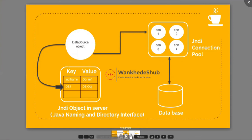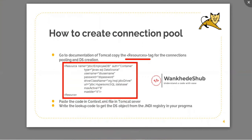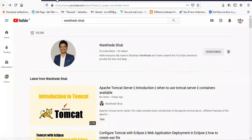This is how we retrieve or get the connection object from your connection pool through the DataSource object. Now, how can you create the connection pool? The steps are very simple. First, you need to search for the Resources tag. You can find it through the Tomcat server documentation or by searching on the internet. I'm going to show you how to search for this Resources tag online. The next steps are easy: paste the code into the context.xml file, then write your lookup code.